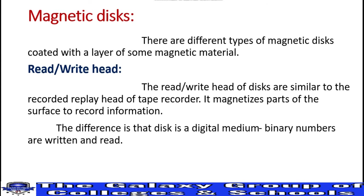The difference is that, whereas we used to store information on audio and video tape, we also store information on the magnetic disc. But there is a main difference: the data is stored in digital form, and binary numbers are written and read.